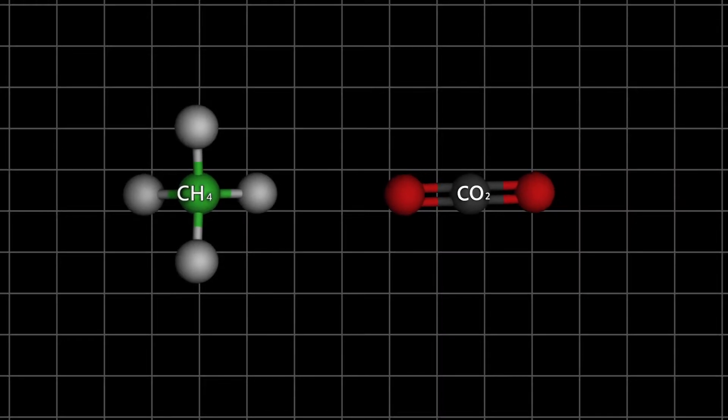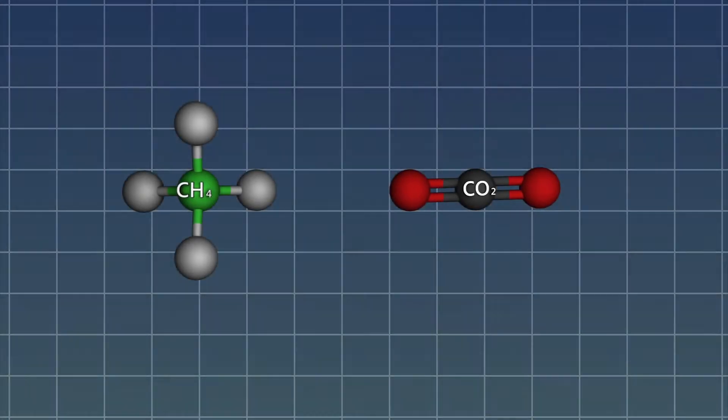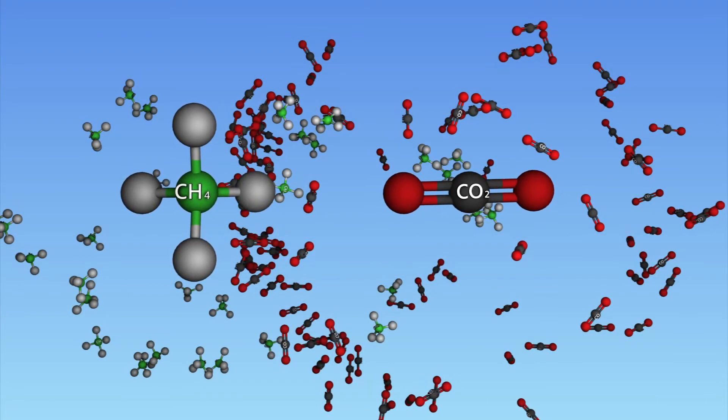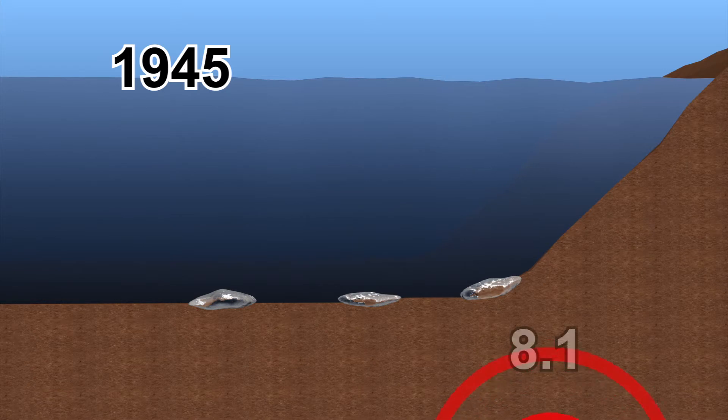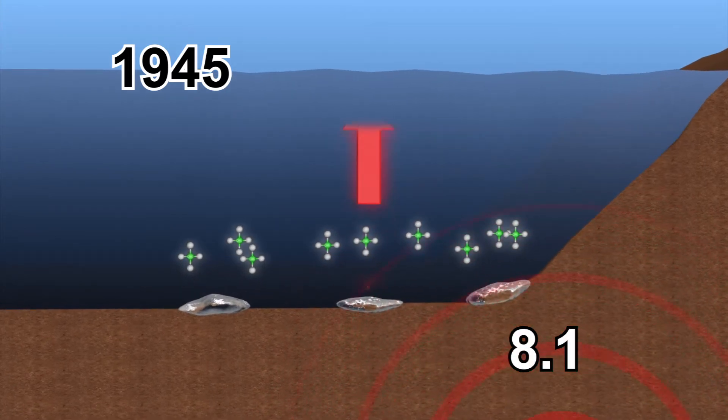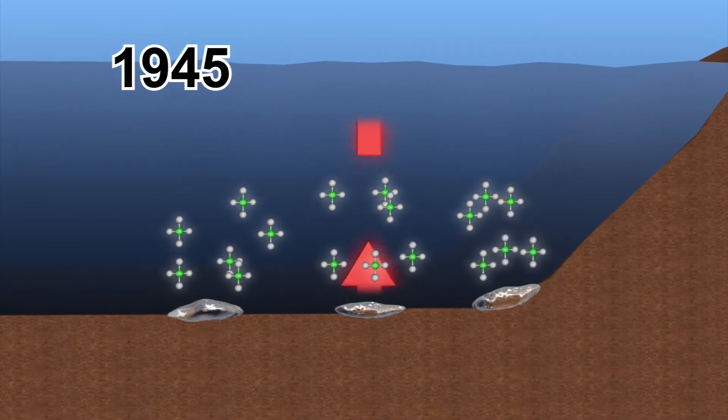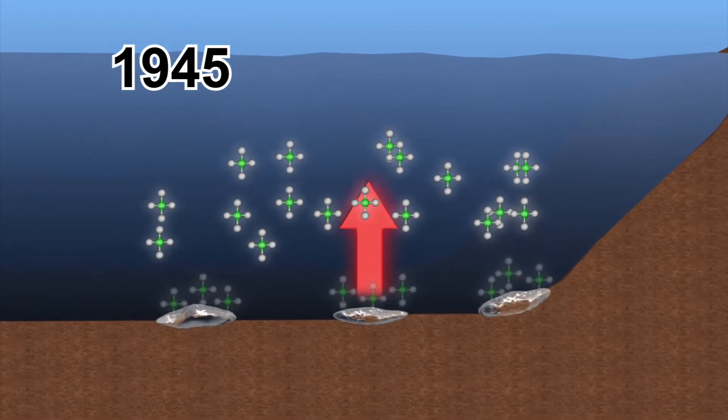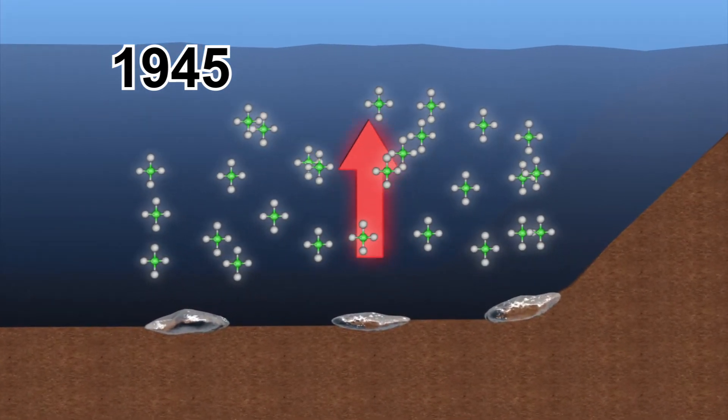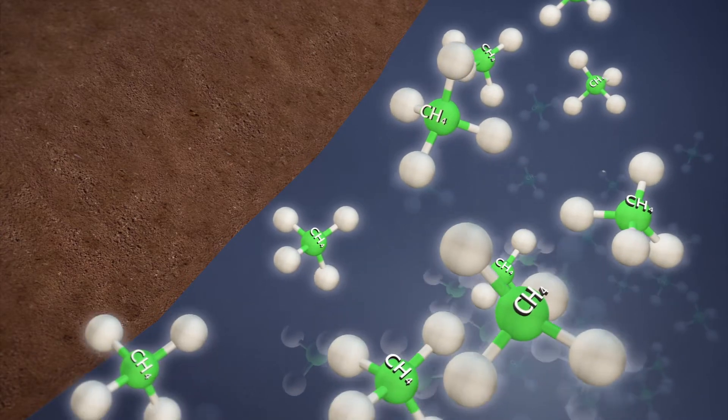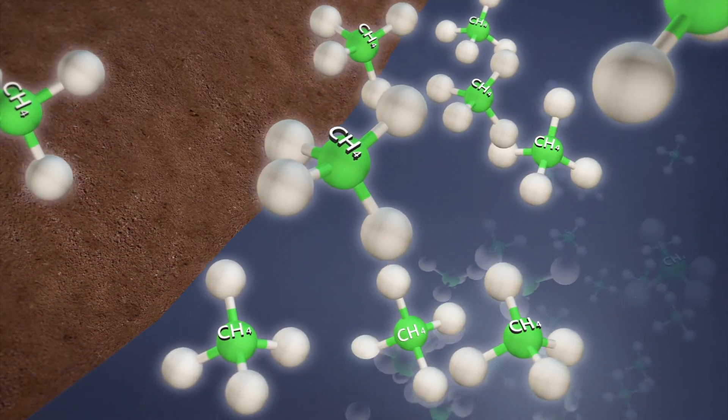Methane is a greenhouse gas, 20 times more potent than carbon dioxide, but less abundant in the atmosphere. According to Nature Geoscience, scientists discovered that an earthquake that happened in 1945 in the North Arabian Sea caused a fracture in methane sediments, which caused the release of more than 7 million cubic meters of methane into the sea and into the atmosphere.